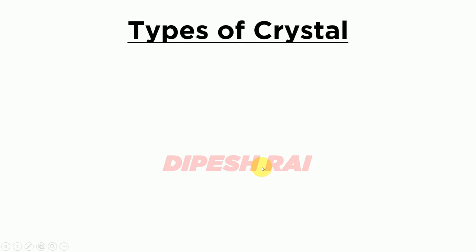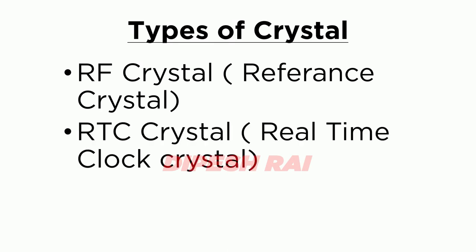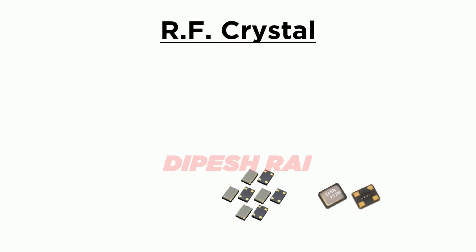There are basically two types of crystal. The first one is the RF crystal, which is known as the reference crystal, and the second one is the RTC crystal, which is known as the real-time clock crystal.